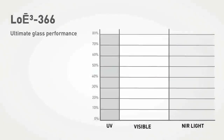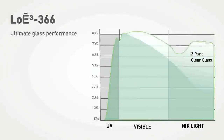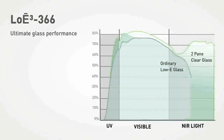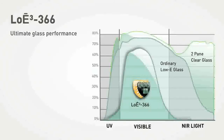What does this all mean? Clear glass transmits the most visible light, but also all the heat and fade-inducing rays. Ordinary low-E only makes a small improvement over clear glass. But low-E cubed 366 restricts unwanted UV and near-infrared while providing an attractive neutral appearance.